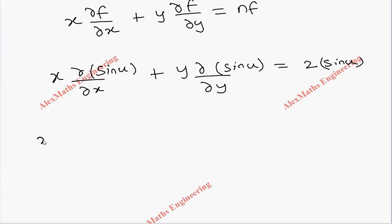It is a partial derivative with respect to x. Sin u differentiation is cos u, then this u we have to differentiate with respect to x by chain rule. In the same way, here it is cos u, then this u we have to differentiate with respect to y, so ∂u/∂y.